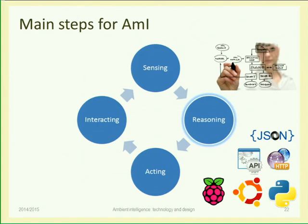Sensing means getting data and trying to make sense of it. Then, reasoning — algorithms, processing: if this condition happens, we have a rule that infers we should do something. This is the realm of algorithms. In this course we'll use Python on Linux/Ubuntu machines, implement on the Raspberry Pi board for ubiquitous computing, and build distributed systems that exchange APIs over HTTP connections, with data in JSON format. These are the technologies that today glue the Internet of Things.